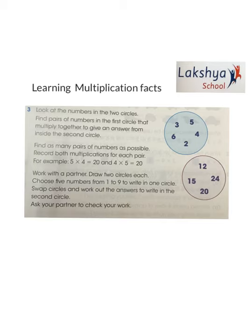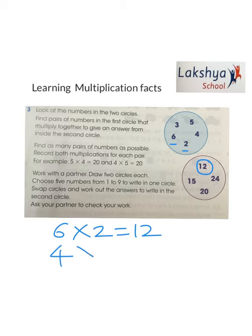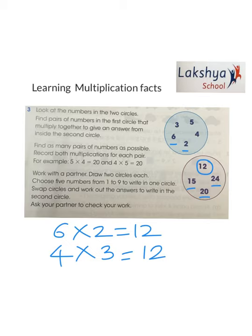Work out the remaining pairs whose answers appear in the second circle. For example, six twos are 12, which is in the second circle, and four threes are 12 as well — so these two are pairs that make 12. Similarly, work out pairs for 15, 20, 24. Also try to create your own two circles: choose five numbers from 1 to 9 in one circle and their products in the second circle, so that you or a friend can identify the pair numbers.